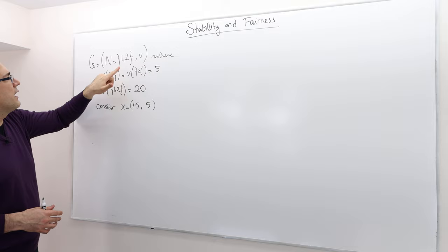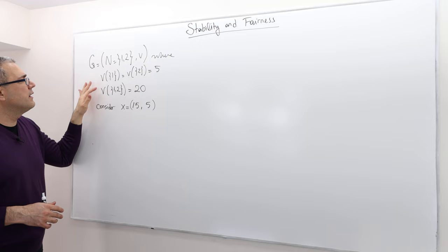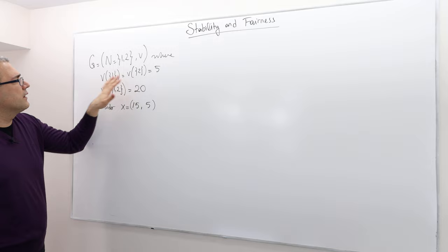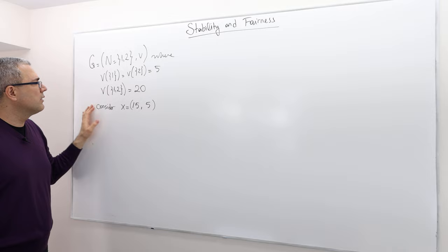So suppose that this is the coalitional game, very simple, there are only two players, and this is what the worth function is. So whenever the coalition is singleton, the worth is just equal to 5. However, if the grand coalition is formed, then the worth jumps all the way up to 20.